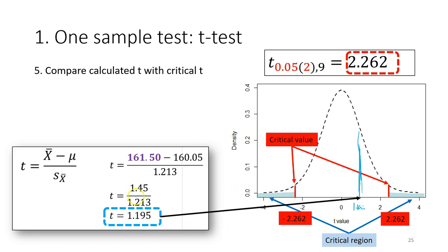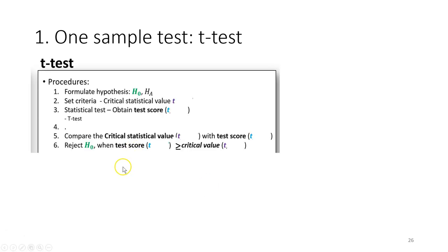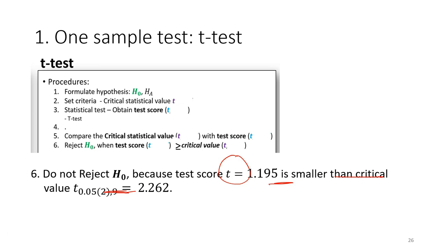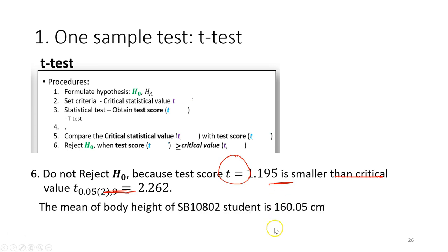Since the calculated t does not fall into the rejection region, we move to the conclusion. We do not reject the null hypothesis because the test score is smaller than the critical value. Therefore, we conclude that the mean body height of the students in this course is 160.05 cm.